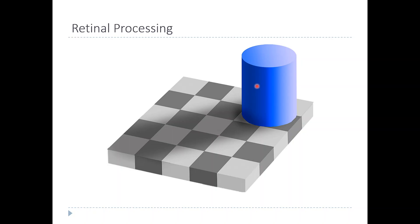Here's an even stronger example. This is a picture of a cylinder sitting on top of a checkerboard. If you ask which is darker — this square here or this square here — most people would say one is lighter and the other darker. They are in fact exactly the same shade of gray.